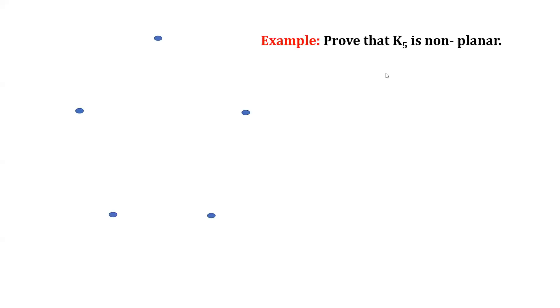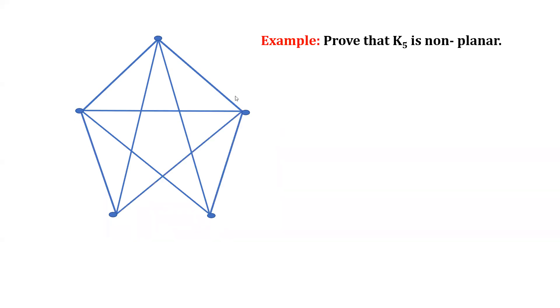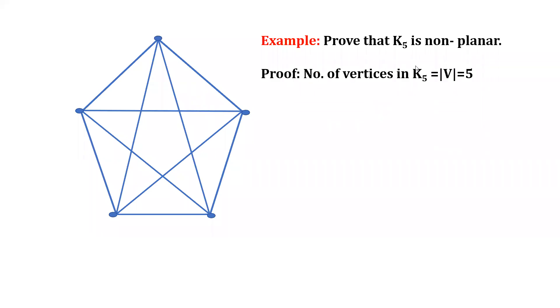The question is: prove that the graph K5 is non-planar. K5 is a graph with five vertices, and you have to make an edge between every pair of vertices. Selecting the first vertex, we make edges to all four others; then the second vertex makes edges with the remaining vertices, similarly the third and fourth vertices each make edges with remaining vertices. In this way you have made K5, the complete graph with five vertices, and now we have to prove that this is non-planar.